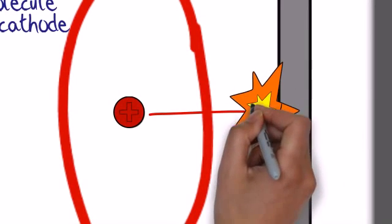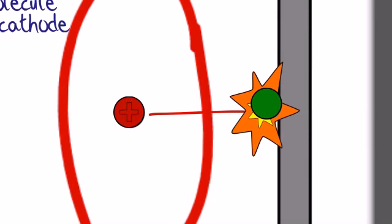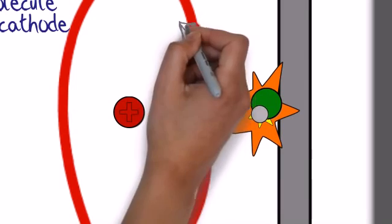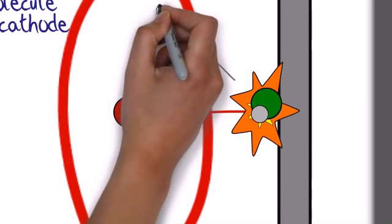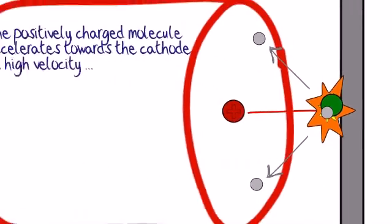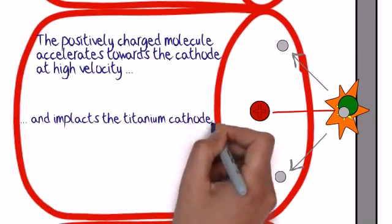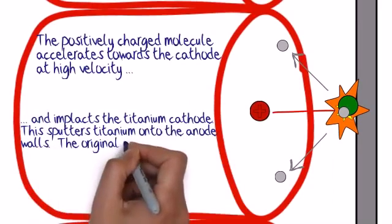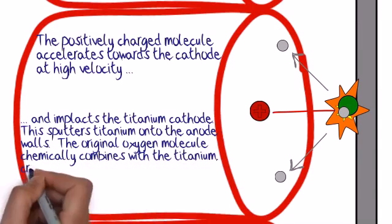And when it hits that plate, it's going to sputter, and there are two things that happen. One is a chemical reaction. We use titanium as our material, and that oxygen is going to chemically combine with that titanium. And at the same time, there's going to be a physical reaction, and that impact is going to spray or sputter titanium molecules all over.